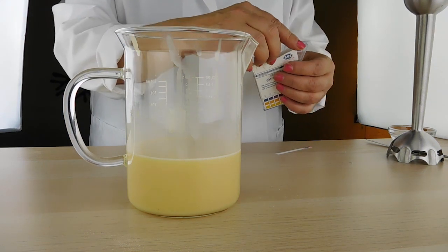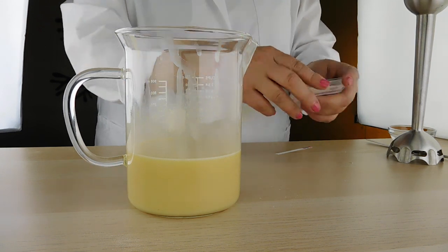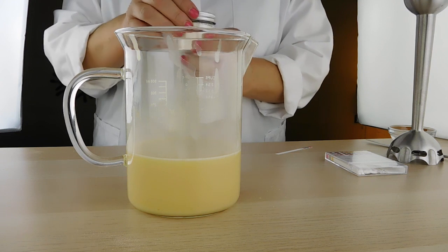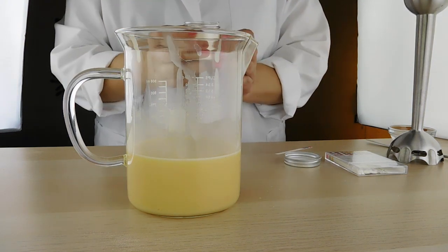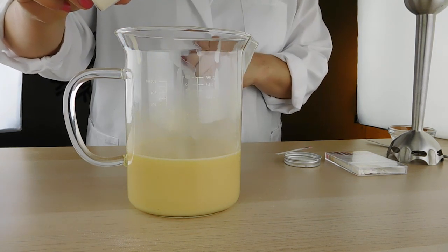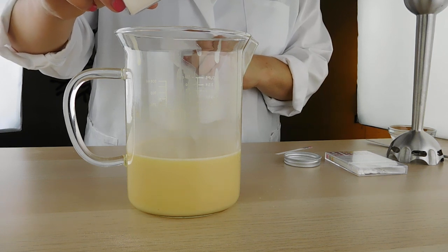You want the pH to be somewhere between four and a half and five and a half. And of course you want to be careful, the eye area is a very sensitive area. So I've got a little citric acid here in this jar that I use for pH adjustments to adjust the pH down. To adjust it higher you'd use baking soda. Of course we want it to be lower so I'm just going to sprinkle a little bit in here.